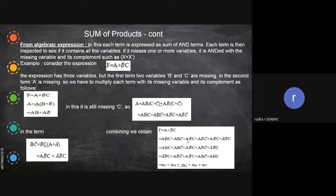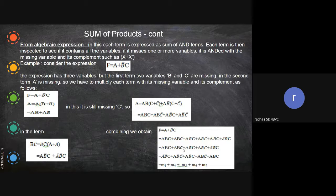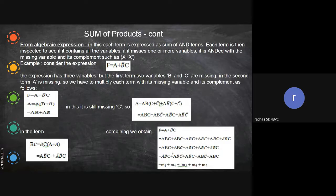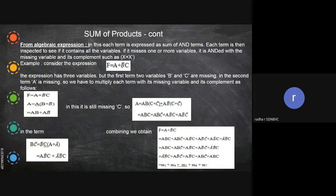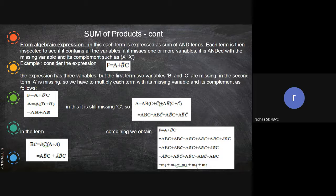The strict rule of Sum of Products — or Product of Sum — is: however many variables there are, all variables must appear in your answer in each term, either complemented or not. That's why we look at reduced equations versus expanded ones. The reduced equation f = a + b̄c is a simplified form. The expanded Sum of Products form has five AND terms — you need five AND gates and one OR gate. But if you draw the circuit for the reduced equation, you need only one AND gate and one OR gate, since a can go directly as input to the OR gate.